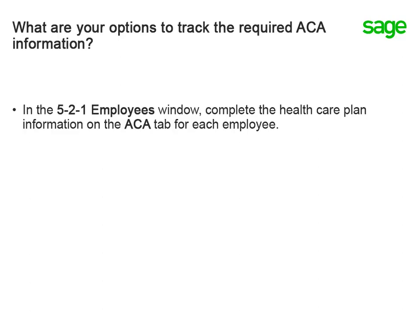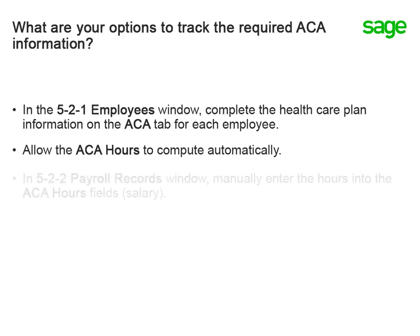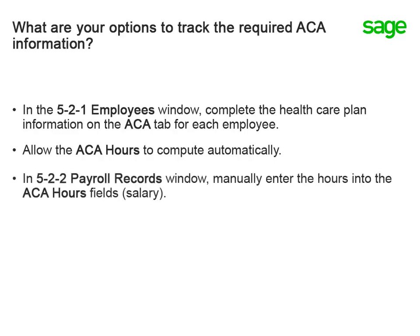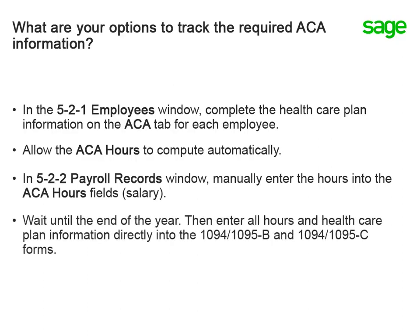If you use the date field when entering time in the 522 payroll records window, the program will automatically accumulate the correct ACA hours. If you do not use the date field, or have employees that do not accumulate hours — like salary employees — you can manually input the ACA hours in the 522 payroll records window. The last option is to wait until the end of the year and manually enter all employee health plan information and hours directly into the 1094 and 1095 forms.